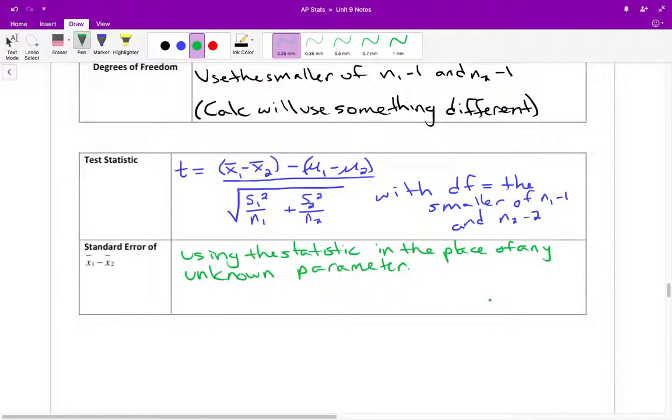And then here's your test statistic. If you notice again, we are using t as our test statistic. And to calculate t, you take x bar sub 1 minus x bar sub 2, that quantity minus mu sub 1 minus mu sub 2, that quantity, all of that, over the square root of standard deviation s sub 1 squared over n1 plus standard deviation s sub 2 squared over n2. Again, with degrees of freedom being the smaller of n1 minus 1 and n2 minus 2. For the standard error of x1 minus x2, basically just using statistic in the place of any unknown parameter is getting the margin of or the standard error.